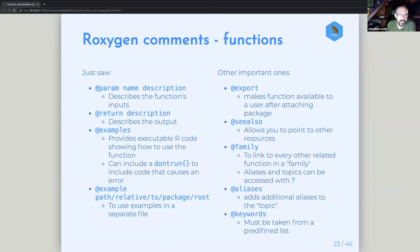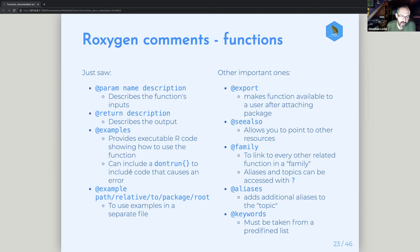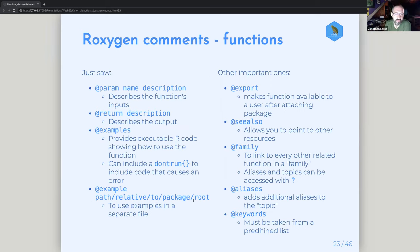Some of the more commonly used Roxygen tags: @param, followed by the name and description, tells you what the inputs are for a function. @return and a description tells you what comes out of it — best practice is to also say what kind of object, like a vector, list, or data frame. @examples is fairly self-explanatory. One thing I never really understood was the dontrun header you sometimes see ahead of examples — that's for when you want to show code that would cause an error if you did run it. You can also have all your examples in a separate file and just include the path to that file, which is handy if you've got a whole ton of examples.